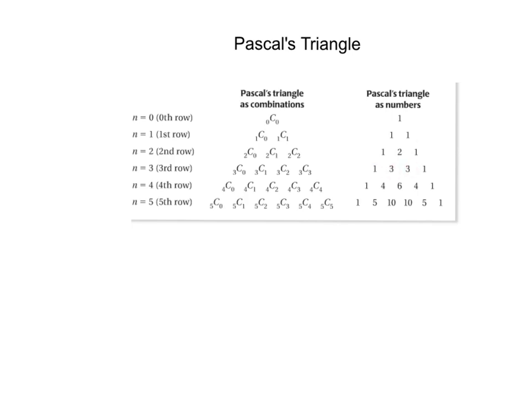1 plus 3 is 4, 4 plus 6 is 10, 3 and 1 is 4, 3 and 3 is 6. That's how we create Pascal's triangle. We use Pascal's triangle to expand our binomial theorem.